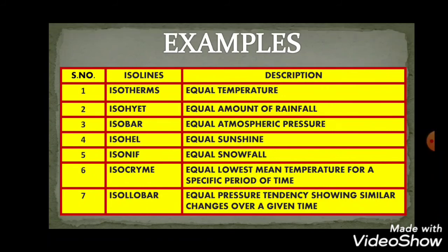Isotherm represents equal temperature. Isohyet — the prefix 'HY' relates to water — represents equal amount of rainfall. Isobar represents equal amount of atmospheric pressure. The word 'bar' in isobar relates to the barometer, which is used to measure atmospheric pressure.